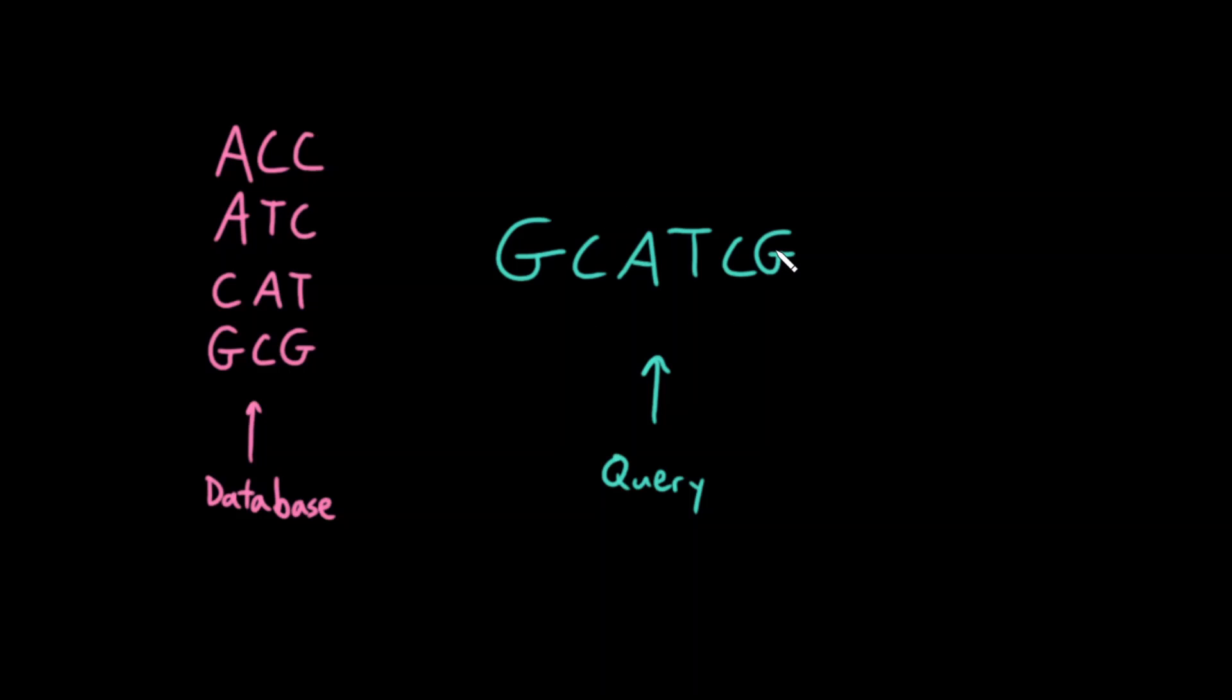For example, in the world of bioinformatics this database could be a set of DNA sequence motifs, and this long query sequence could be a newly sequenced genome. I would want to find all instances of any of these motifs as they appear in this genome.